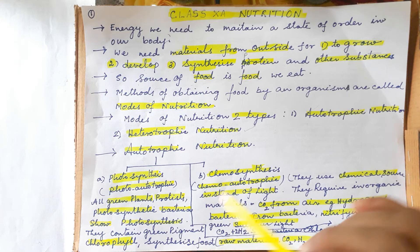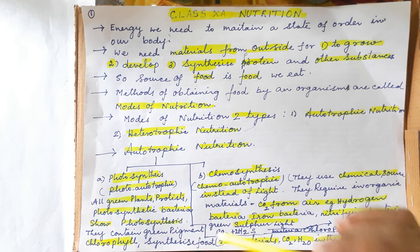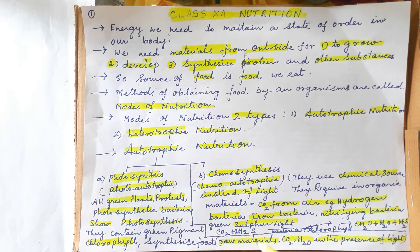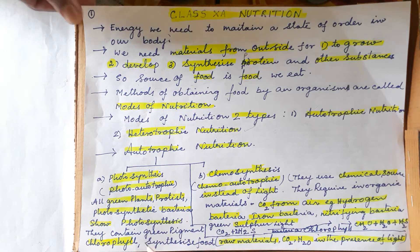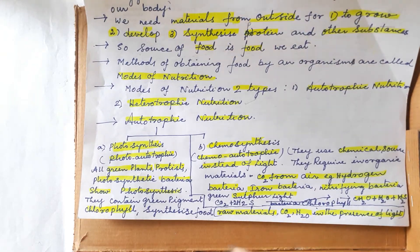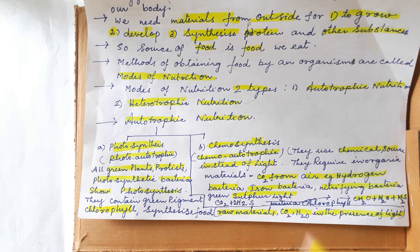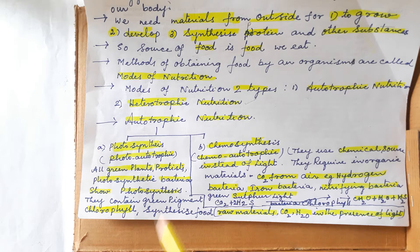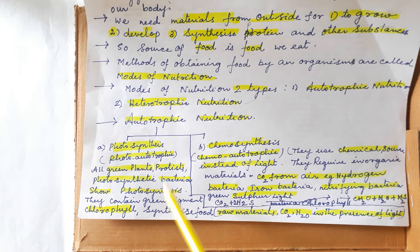From all these examples, we understand that chlorophyll is needed to absorb light, and the raw materials for photosynthesis are carbon dioxide (CO2) and water (H2O). In the presence of light, green plants synthesize food — that is called photosynthesis.